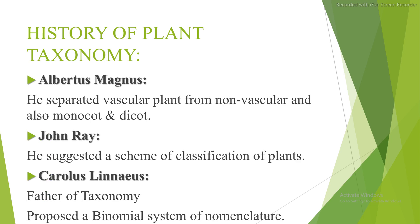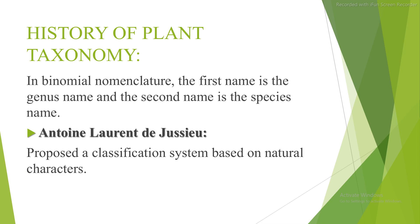Albertus Magnus separated vascular plants from non-vascular plants and also monocots from dicots. John Ray suggested a scheme of classification of plants. Carolus Linnaeus, also called the father of taxonomy, proposed the binomial system of nomenclature, in which the first name is the genus name and the second name is the species name. John Laurent de Jussieu proposed a classification system based on natural characters.